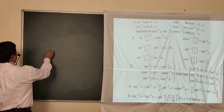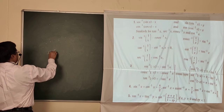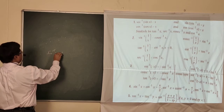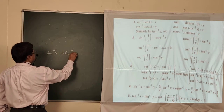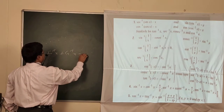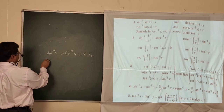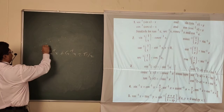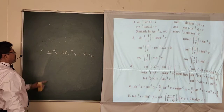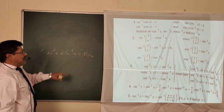One important formula: sin⁻¹x + cos⁻¹x = π/2. This is true for all values of x. How can you prove this?